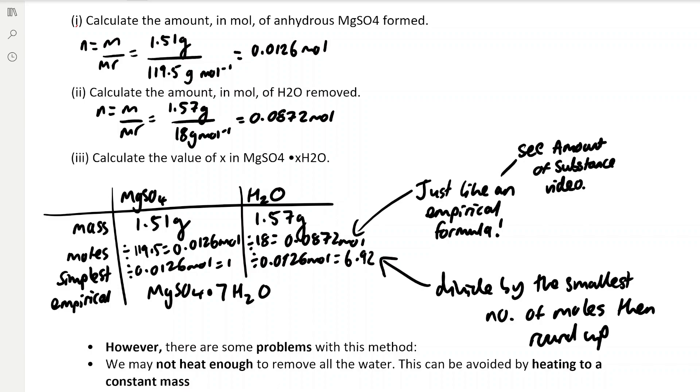We need to find the moles of each component, and then find the simplest whole number ratio by dividing by the smallest number of moles, which in this case is the moles of magnesium sulphate. That gives us a value of 6.92 for the simplest ratio of MgSO4 to H2O. We round that up to 7, so the value of X is 7.